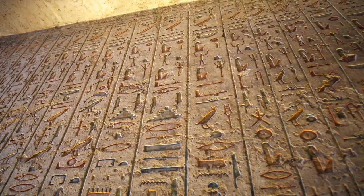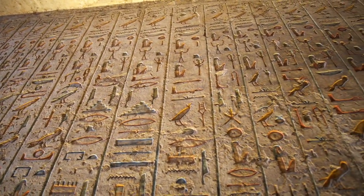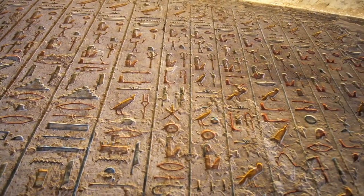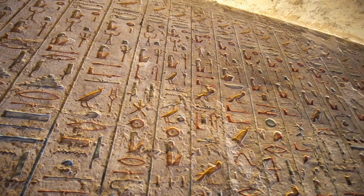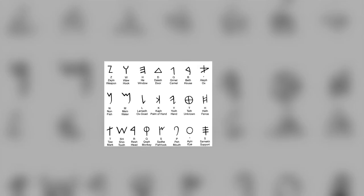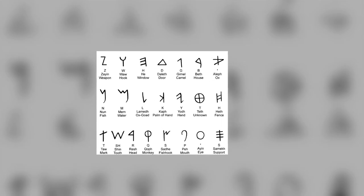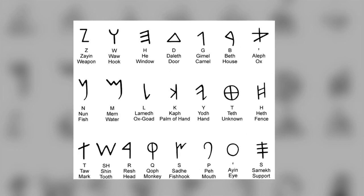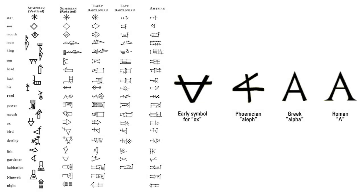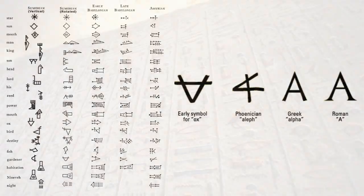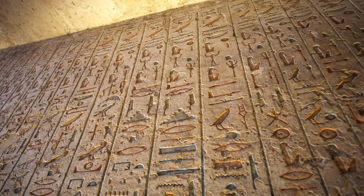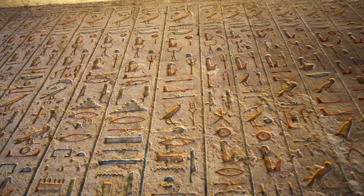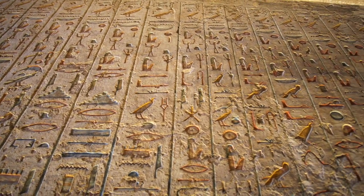We use the term alphabet to discuss the writing of symbols for sounds — specific sounds, or graphemes. The term comes from the first two symbols of the alphabet: alp, an ox head, and bet, a house — or as they became better known in their Greek forms, alpha and beta.